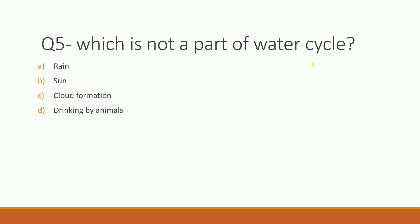Fifth question: which of the following is NOT a part of the water cycle? Options are rain, sun, cloud formation, or drinking by animals. The right answer is drinking by animals. Animals drink water for their own life, not as part of the water cycle process.